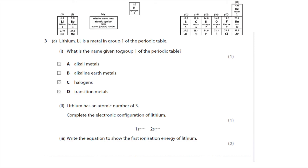Lithium is a metal in group one of the periodic table. What is the name given to group one? Remember, group one elements react with water to produce alkali solutions — they are called the alkali metals. Group two are called the alkaline earth metals, so be careful not to confuse them.